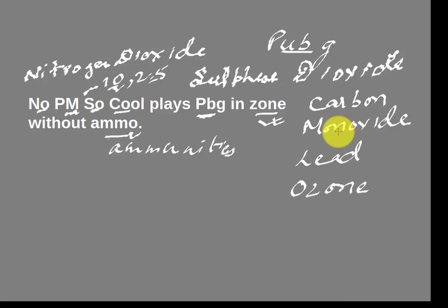From 'zone': ozone. And from MO: NH3, ammonia. So these are the eight pollutants considered under the air quality index.